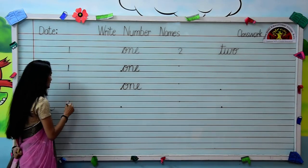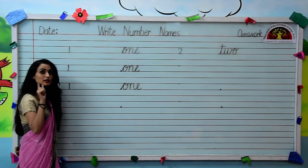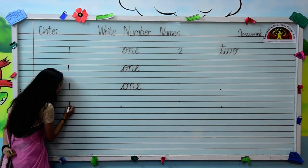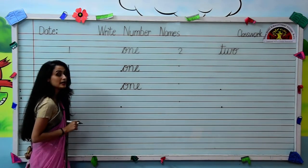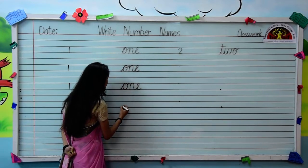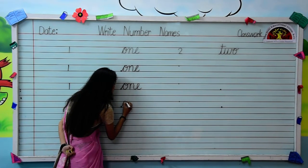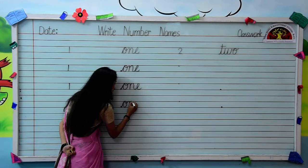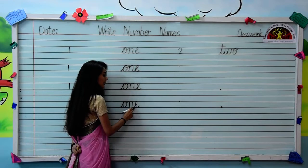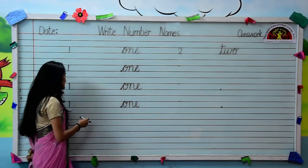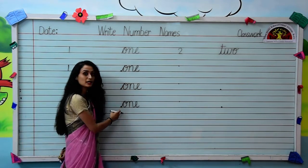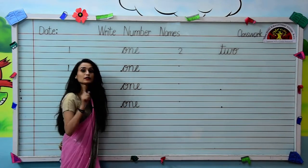Let's see once again, kids. Firstly, we will write numeral 1 — make a standing line like this. This is numeral 1. Now we will write the spelling of numeral 1. Write O, then N, after N write E: O-N-E. This is numeral 1 and this is the spelling of numeral 1: O-N-E.